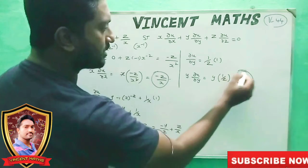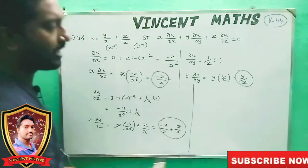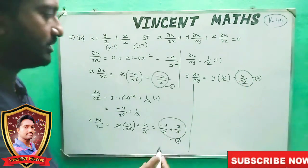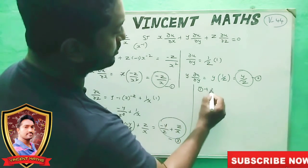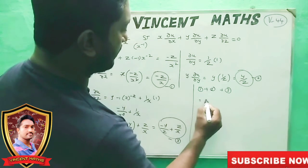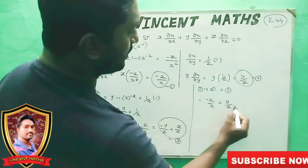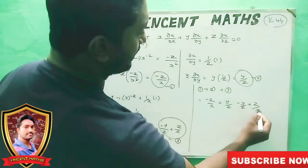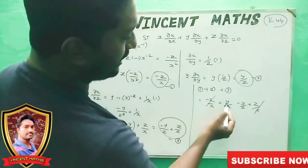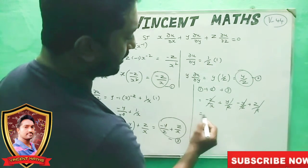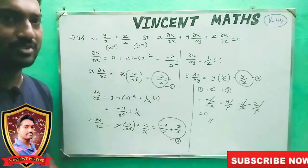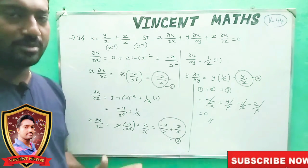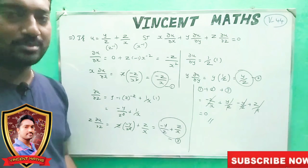We can add equations 1, 2, and 3. Equation 1 plus 2 plus 3: minus z by x, plus z by x, plus y by z, minus y by z. Everything cancels to zero. Easy!